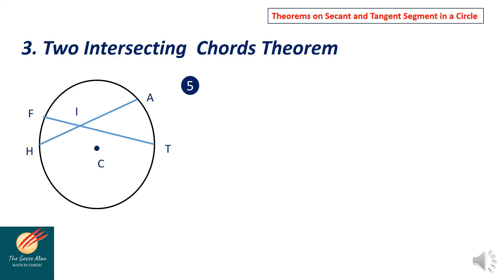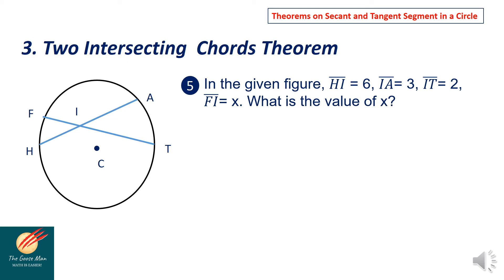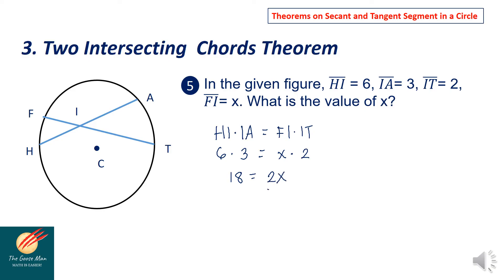Let us consider the next problem. In the given figure, HI equals 6, IA equals 3, IT equals 2, and FI is unknown, which is X. What is the value of X? Since we have two chords intersecting inside the circle, HI times IA equals FI times IT. Substituting: 6 times 3 equals X times 2. Simplifying, 18 equals 2X. Divide both sides by 2, so X equals 9.